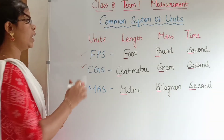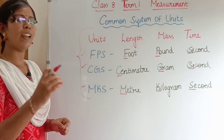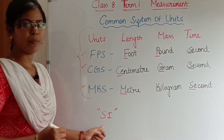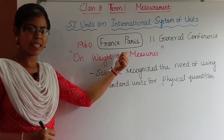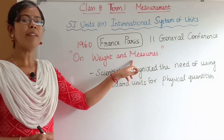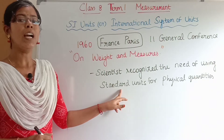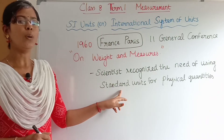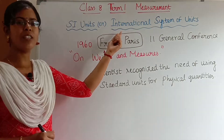To avoid this, a uniform system of units was needed for measurement. So the international system of units was introduced. In 1960, in France and Paris, the 11th General Conference was held on weights and measures. In this conference, scientists agreed to use standard units for physical quantities. Those standard units were called SI units, otherwise known as the International System of Units.